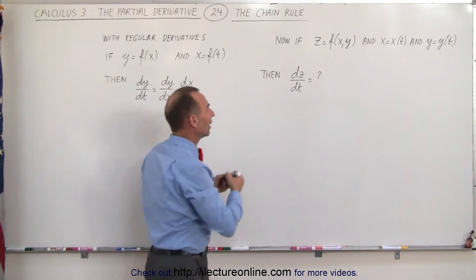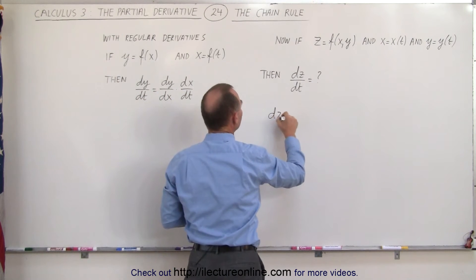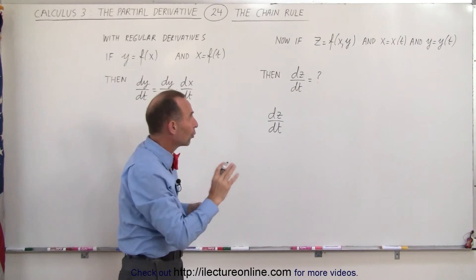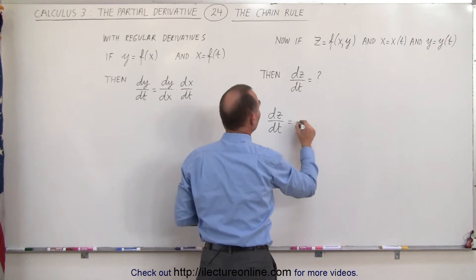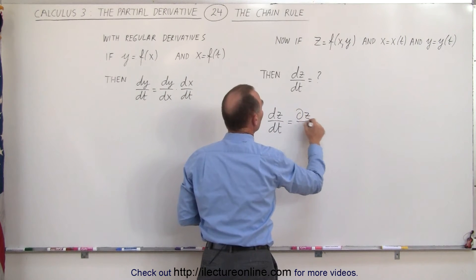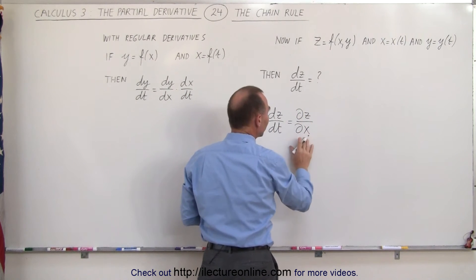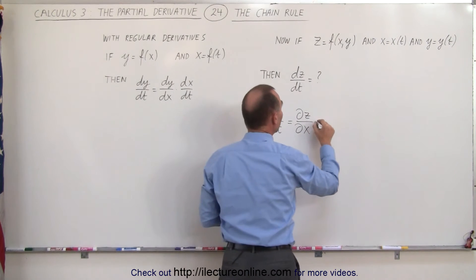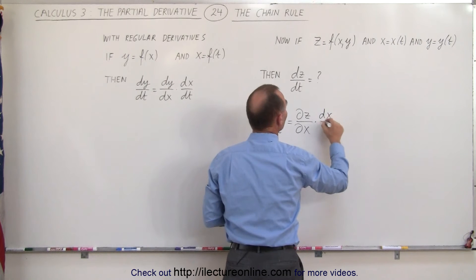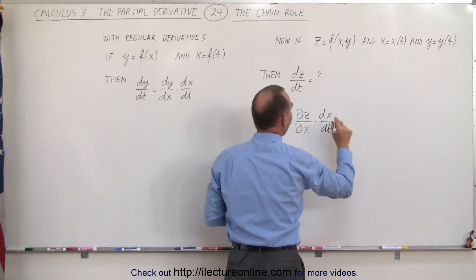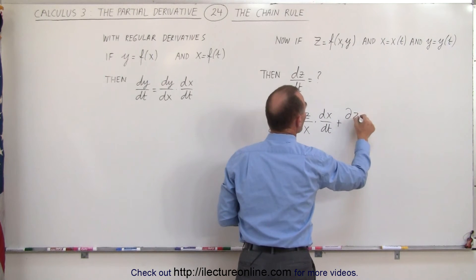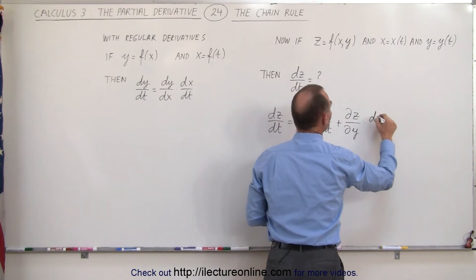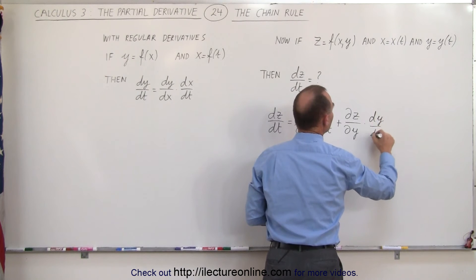Well, it turns out that dz/dt can be found by taking each variable separately. We first take the partial derivative of z with respect to the first variable x, letting y be a constant, and then multiply that times dx/dt. Then we add to that the partial derivative of z with respect to y, now leaving x constant, times dy/dt.